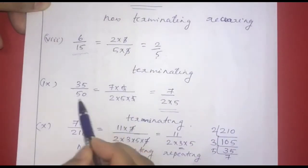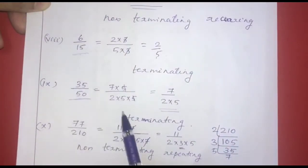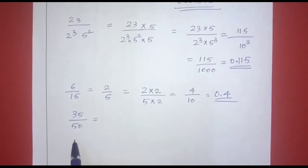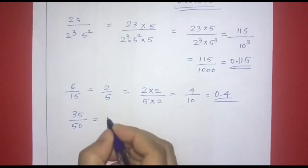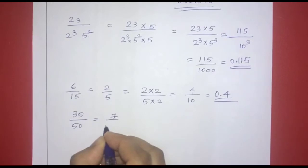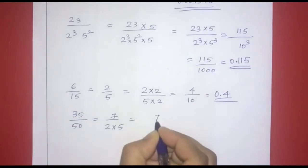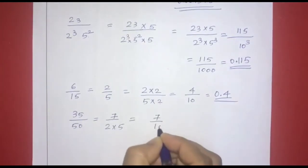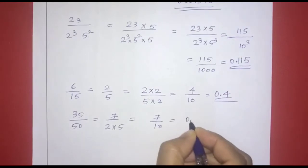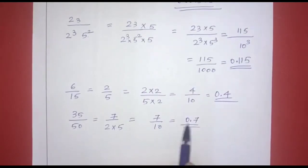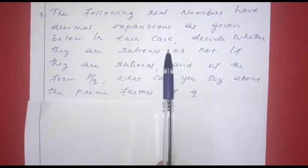For 35 by 50, which simplifies to 7 by 2 into 5 equals 7 by 10. Placing the decimal 1 place from the right, the decimal expansion is 0.7.